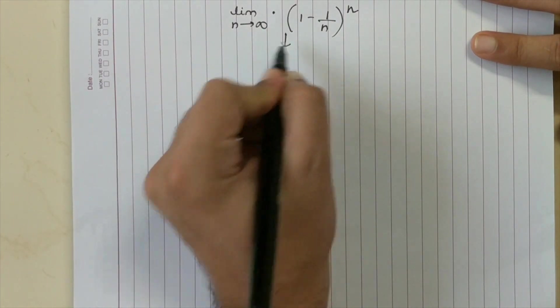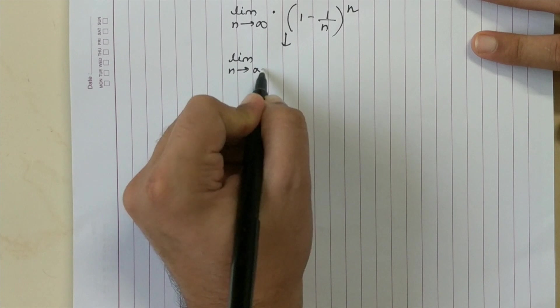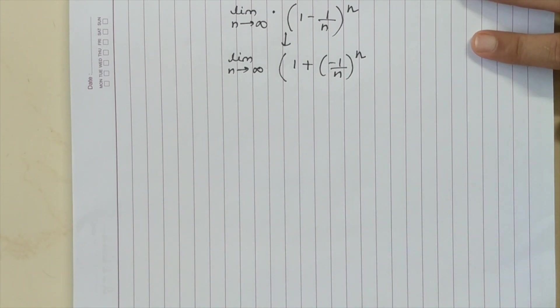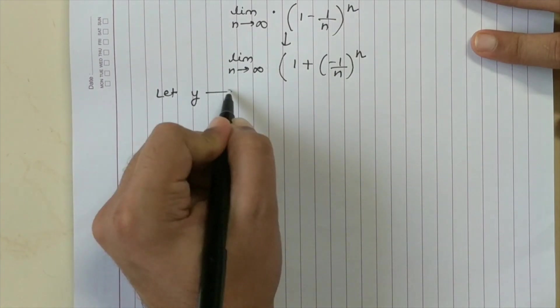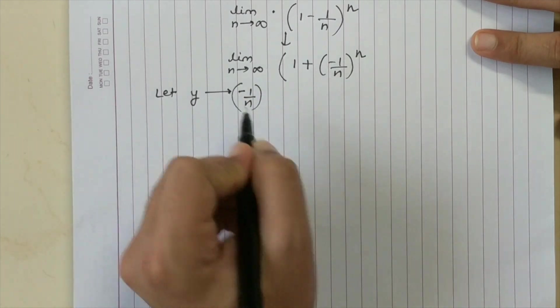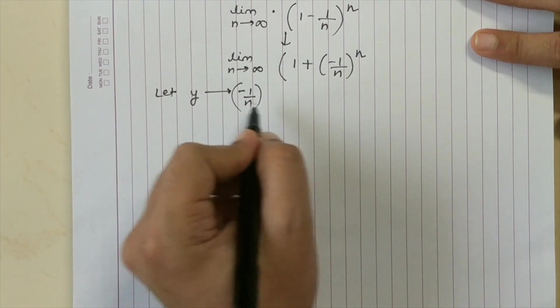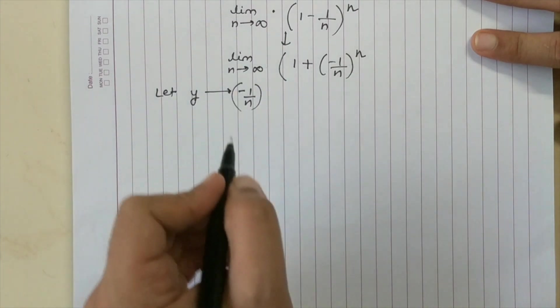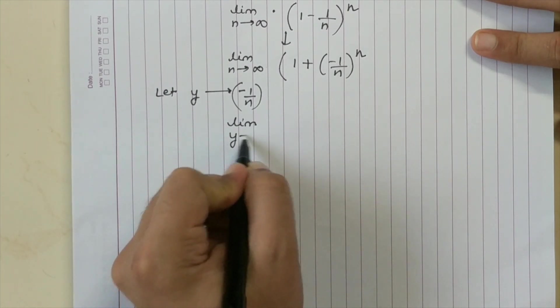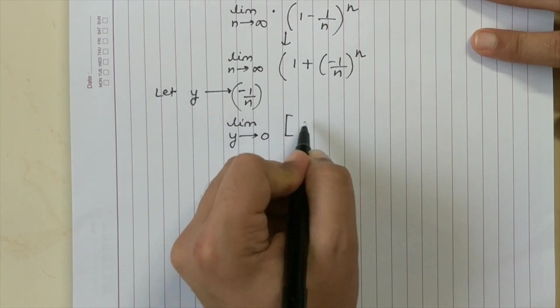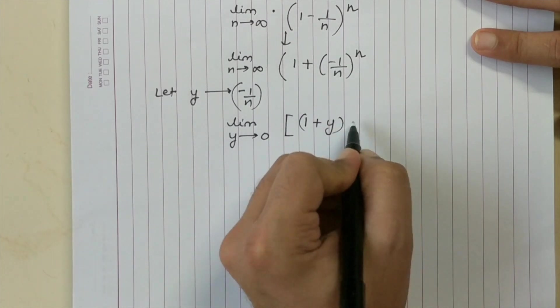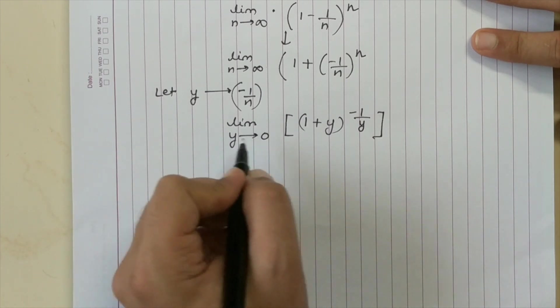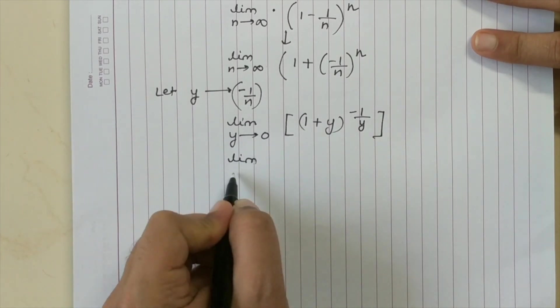I can smartly convert this into limit N tends to infinity, 1 plus minus 1 by N to the power N. I substitute Y as minus 1 by N. So if Y is substituted as minus 1 by N, my limit would change. So from N equal to infinity, the new limit would become Y tending to 0 and this equation would become 1 plus Y to the power 1 by Y.